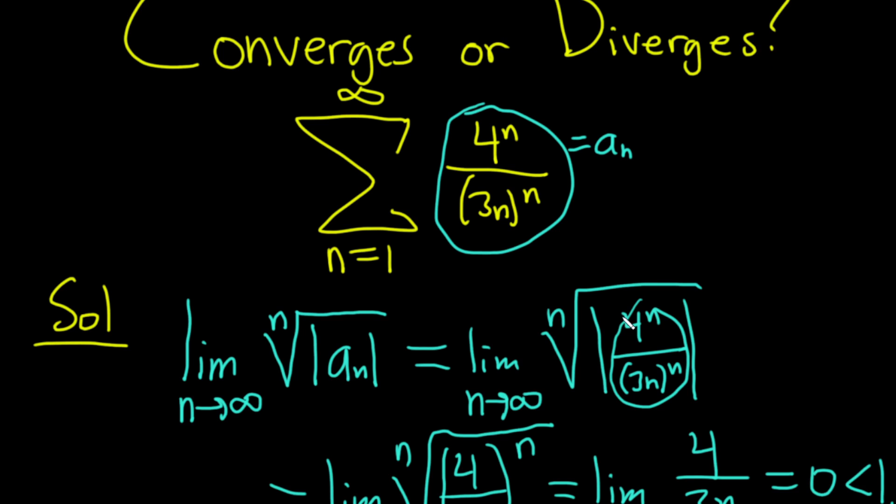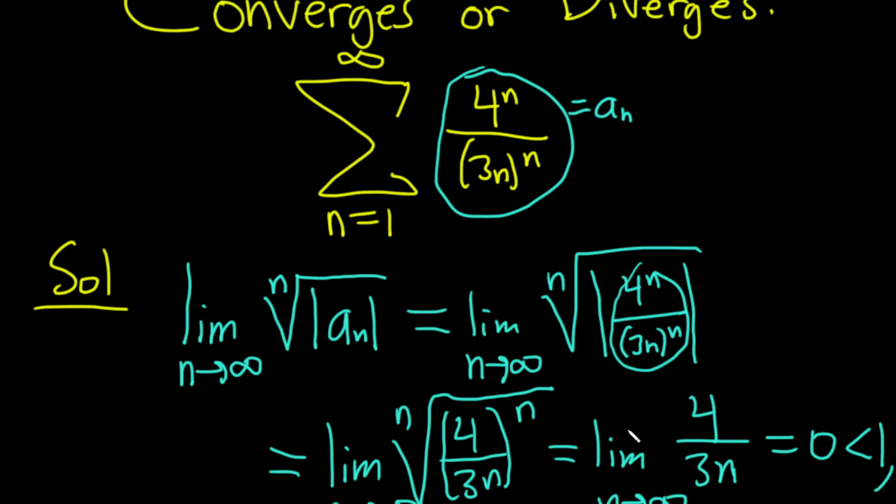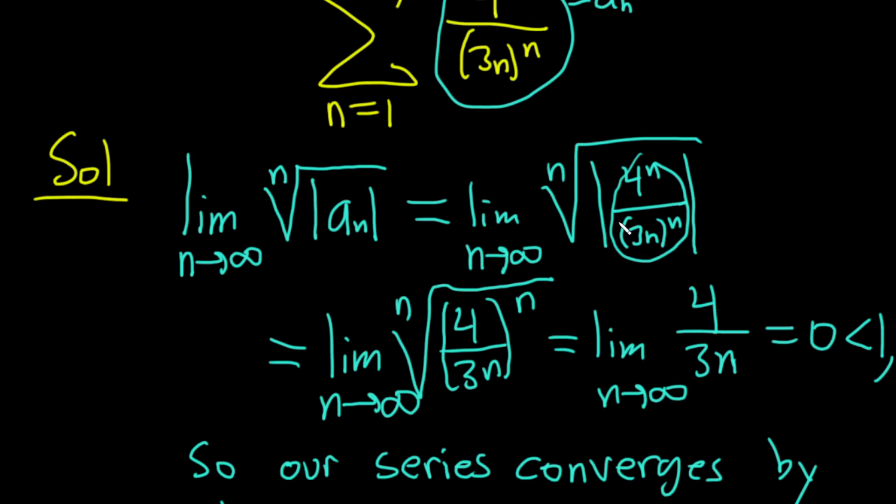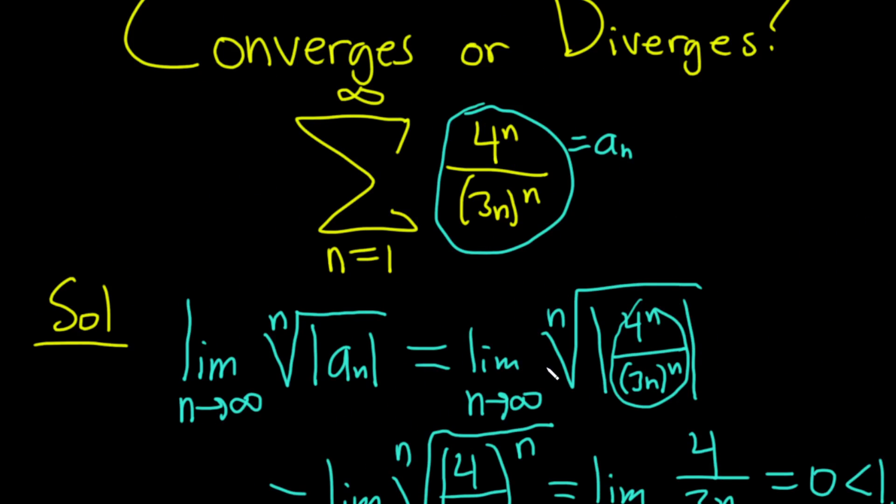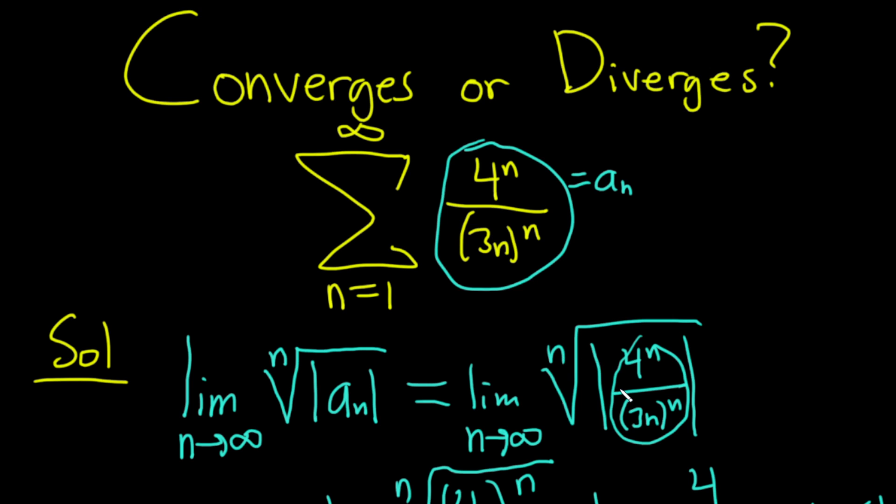Just a little bit of algebra, dropping the absolute value, being aware everything is positive, and then rewriting 4^n over (3n)^n as a single fraction. And then the cancellation. So nice problem. I hope you've learned some math. Take care.